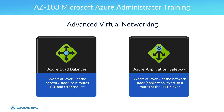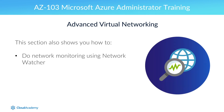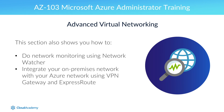For example, it includes a web application firewall that protects your applications from common exploits, such as SQL injection and cross-site scripting attacks. This section also shows you how to do network monitoring using Network Watcher, and how to integrate your on-premises network with your Azure network using VPN Gateway and ExpressRoute.